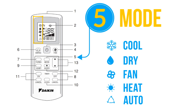For cooling-only units, the available modes are cool, dry, and fan. For the heat pump unit, the available modes are auto, cool, dry, fan, and heat. The auto mode is not available in the chilled water system.